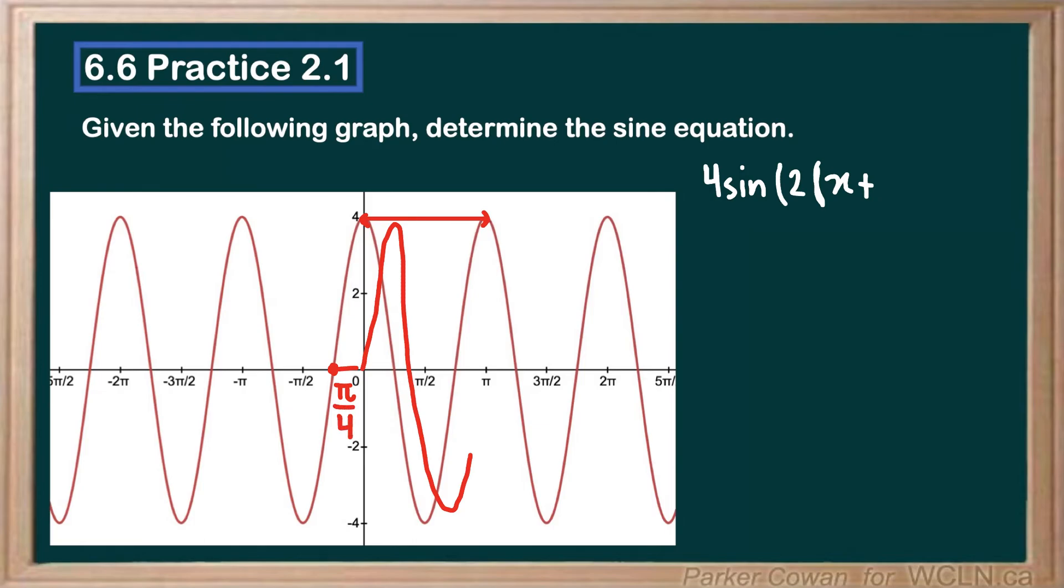So what does that mean for our equation? Well, that means that we have to first pull out this 2, and then we can write π over 4. Now, the reason this is important is that when we factor that 2 back in, we actually get π over 2, right?